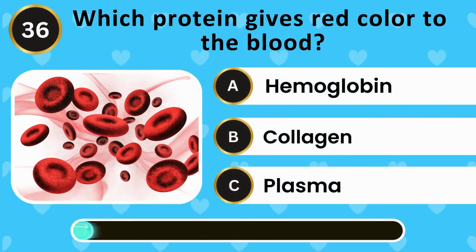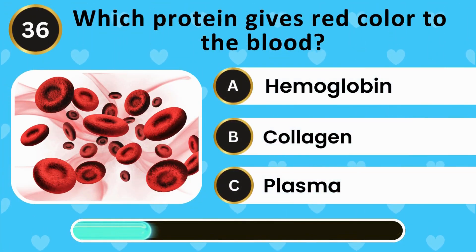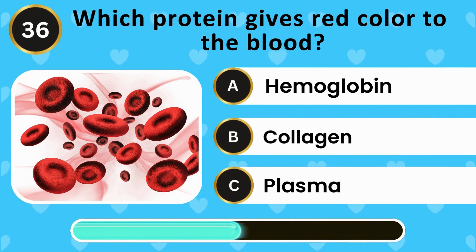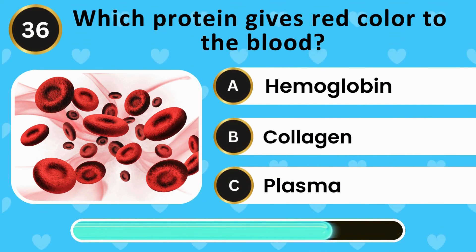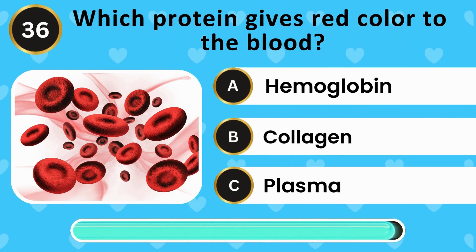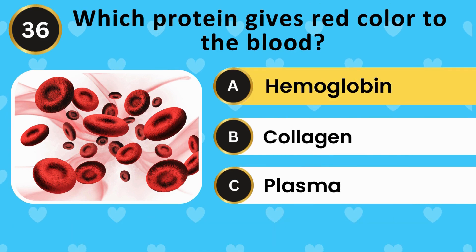Which protein gives red color to the blood? Hemoglobin, collagen, plasma. The answer is hemoglobin.